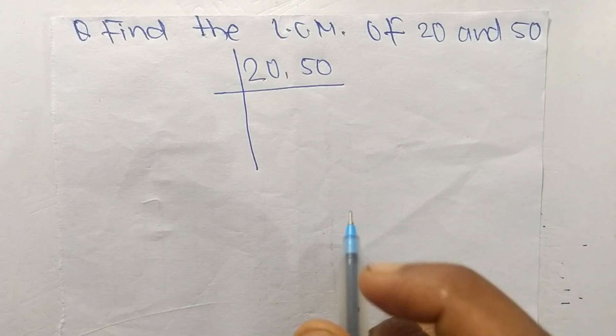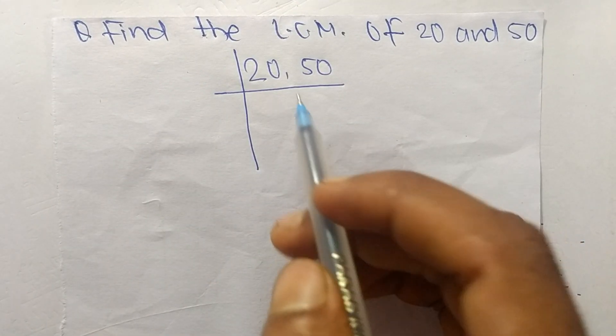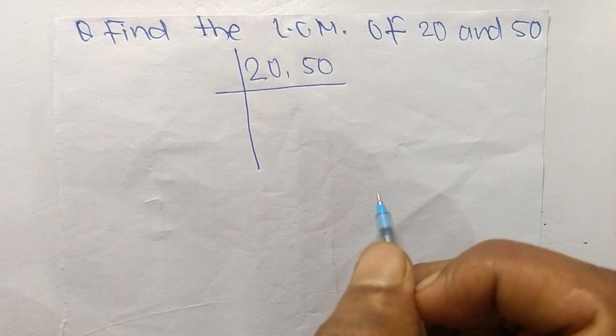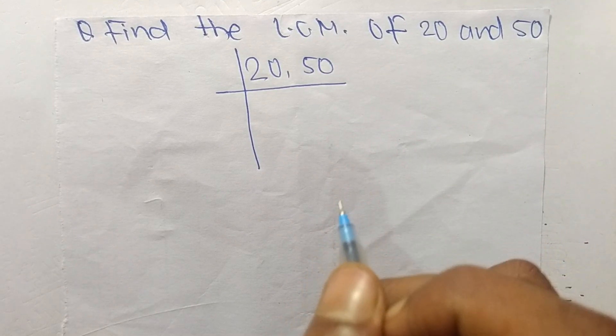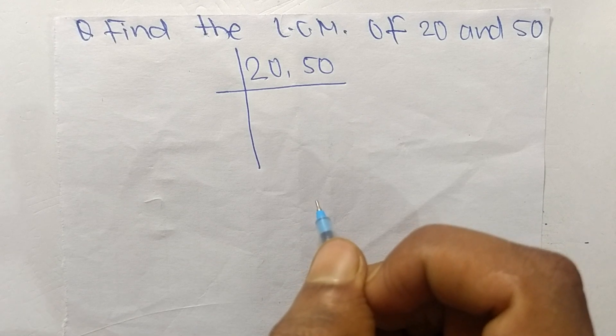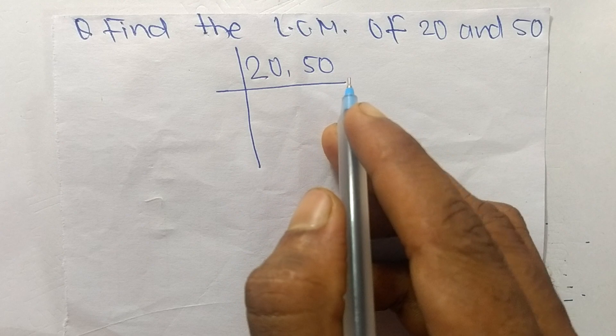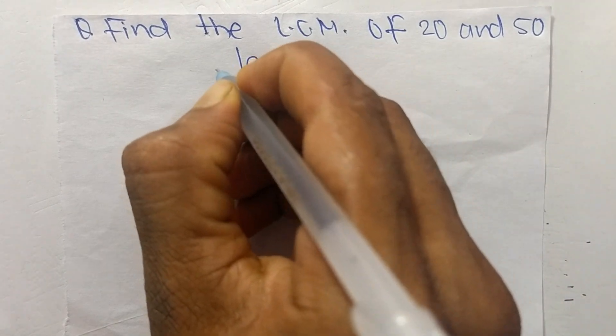So today in this video we shall learn to find the LCM of 20 and 50. To find LCM first we choose the lowest number that can exactly divide 20 and 50. So we take the number 2.